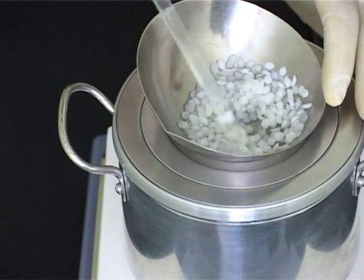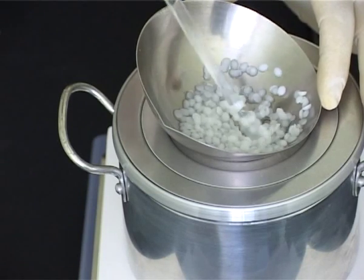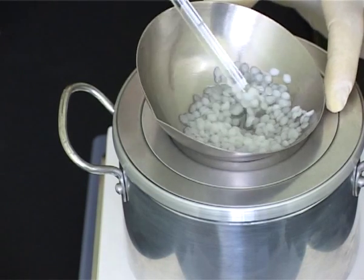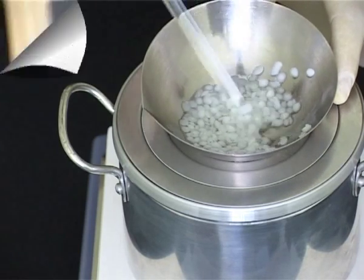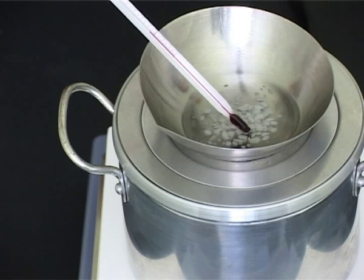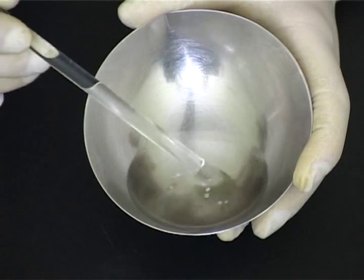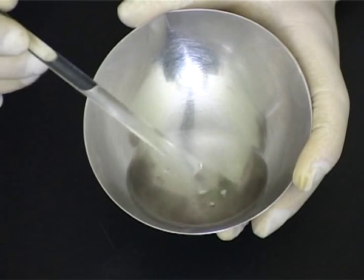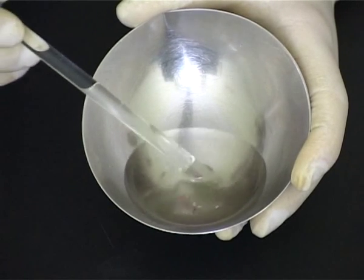Remember to stir to assist melting and to ensure an even temperature throughout the base. Check the temperature and remove the evaporating basin from the heat. Some solids will still be present but the residual heat should ensure that it melts. Stir to assist melting of the remaining solid.